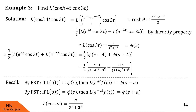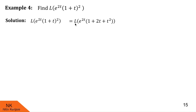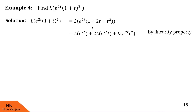Example 4: find Laplace of e raised to 2t into (1 plus t) squared. Here f of t is (1 plus t) squared. Expanding: (1 plus t) squared = 1 plus 2t plus t squared. By linearity property, the Laplace becomes Laplace of e raised to 2t into 1, plus 2 times Laplace of e raised to 2t into t, plus Laplace of e raised to 2t into t squared.